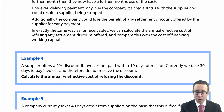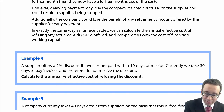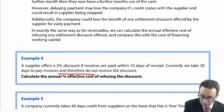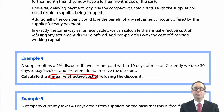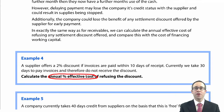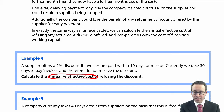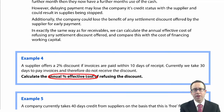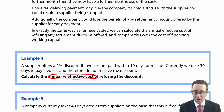We need to calculate the annual percentage effective cost of refusing the discount. If we don't take up the discount, what is that going to cost us? A supplier offers a 2% discount if invoices are paid within 10 days of receipt. Currently we take 30 days to pay the invoices and take no discount whatsoever — so we are reducing it by a 20-day period.